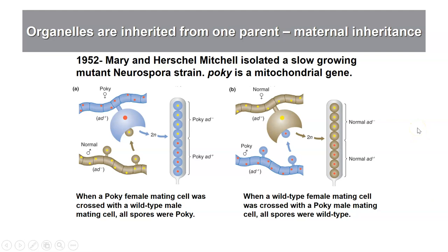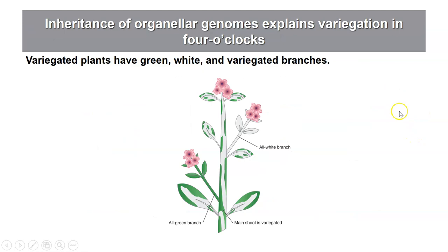This is the typical way that organelle genes and mutants are passed from generation to generation through maternal inheritance. We'll see examples of that later when we talk about human diseases caused by mitochondria. Now let's go back to chloroplasts and describe some experiments done in four o'clock plants, which as we mentioned are variegated.